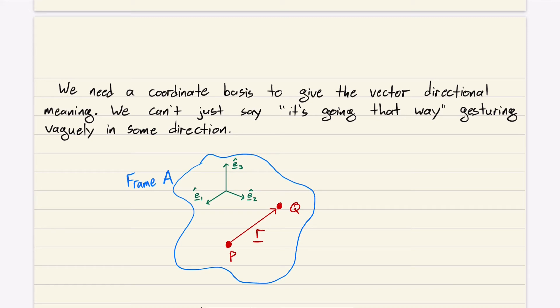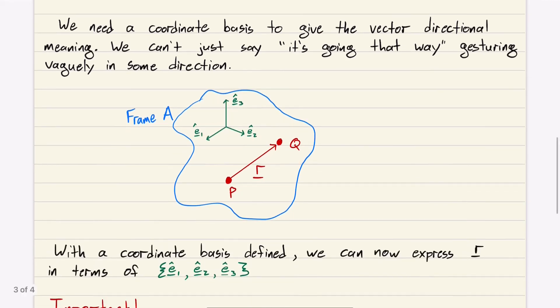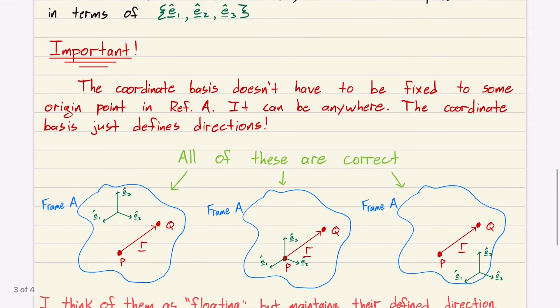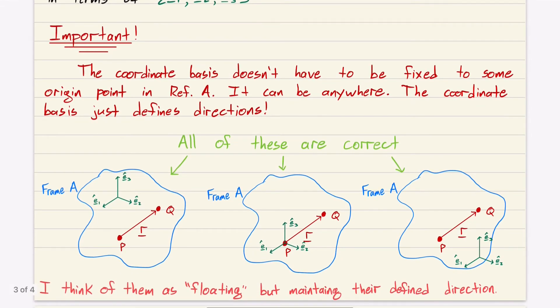What we do is we drop in this coordinate basis. In this case, we call it E1, E2, E3. And now we can define R. We can say R is going some distance in the E1, some distance in the E2, and some distance in the E3. We just defined R. With a coordinate basis defined, we can now express R in terms of E1, E2, E3.